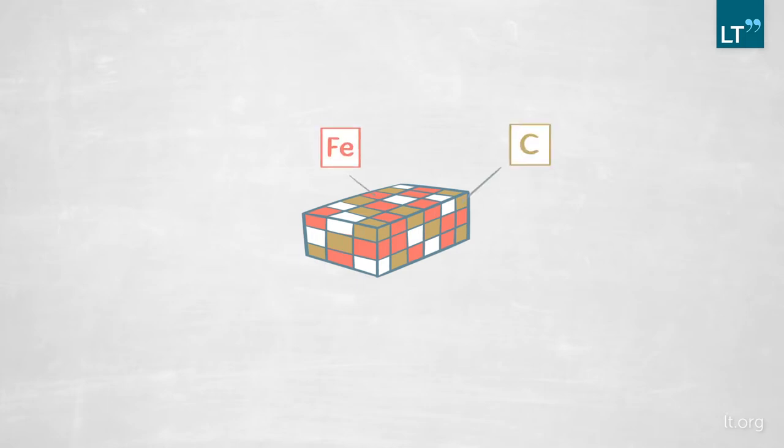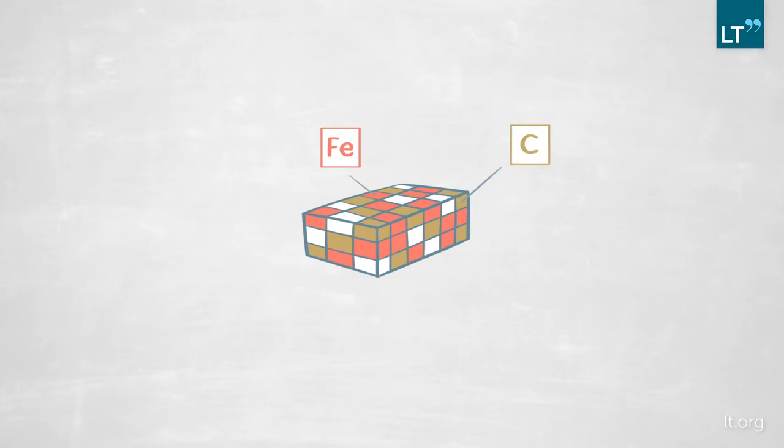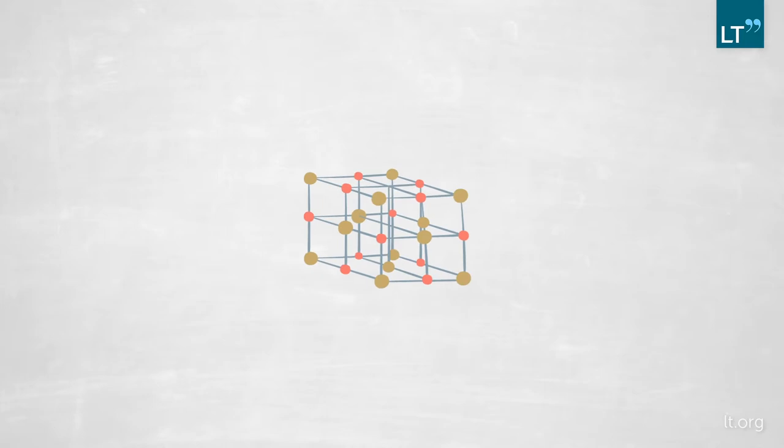Some iron, some carbon getting together and arranging themselves in a very specific way, on a crystal lattice, as we say. And then the carbon sits around the iron in there and provides completely different properties locally to the material.